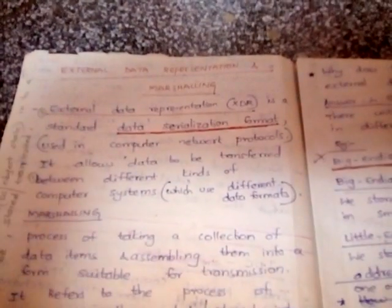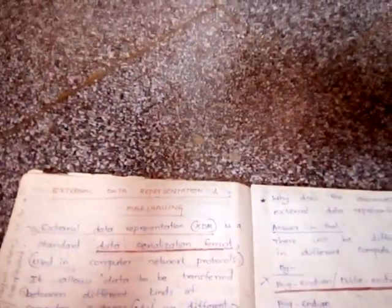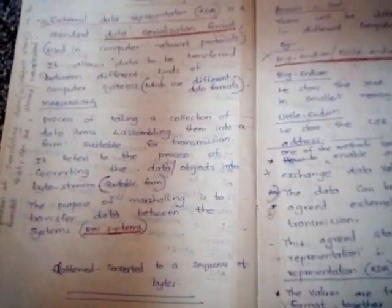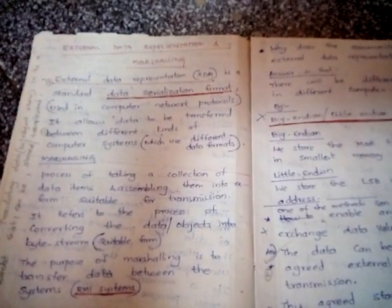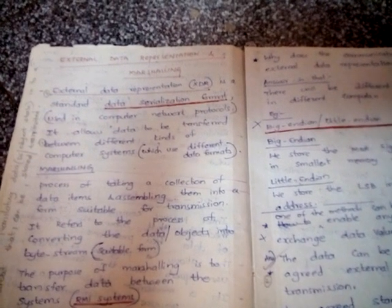External data representation and marshaling is a standard data serialization format used in computer network protocols. It allows data to be transferred between different kinds of computer systems. Marshaling is the process of taking a collection of data items and assembling them into a form suitable for transmission. It refers to the process of converting data or objects into a byte stream.